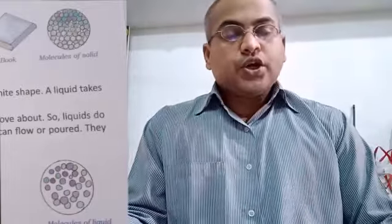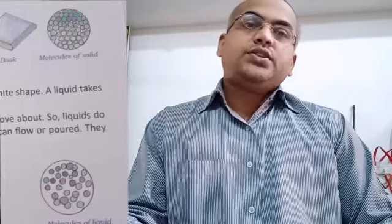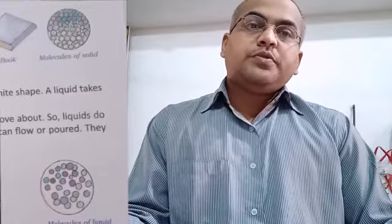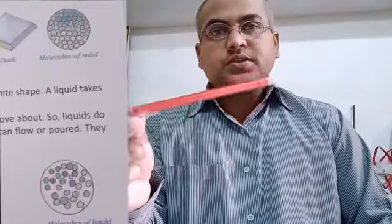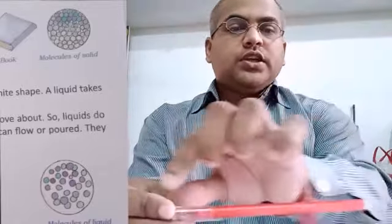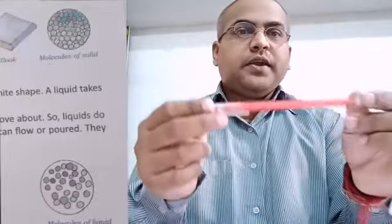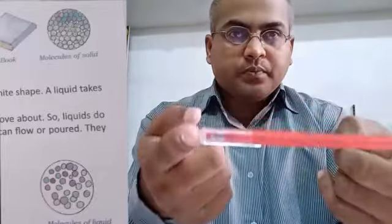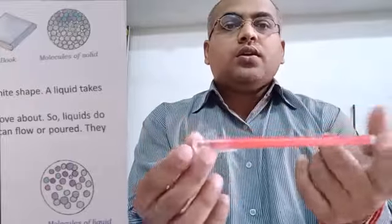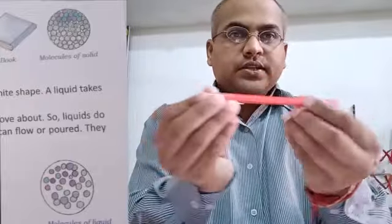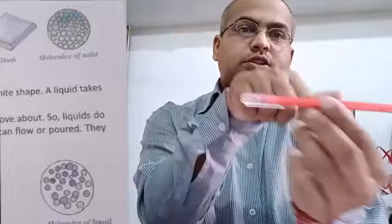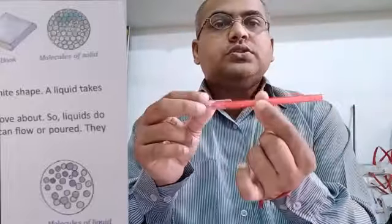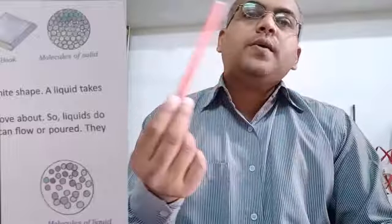Next is volume. The space occupied by any object is called its volume. Like this pen — the space occupied by this pen on this table or in the air, this space is the volume of this pen.